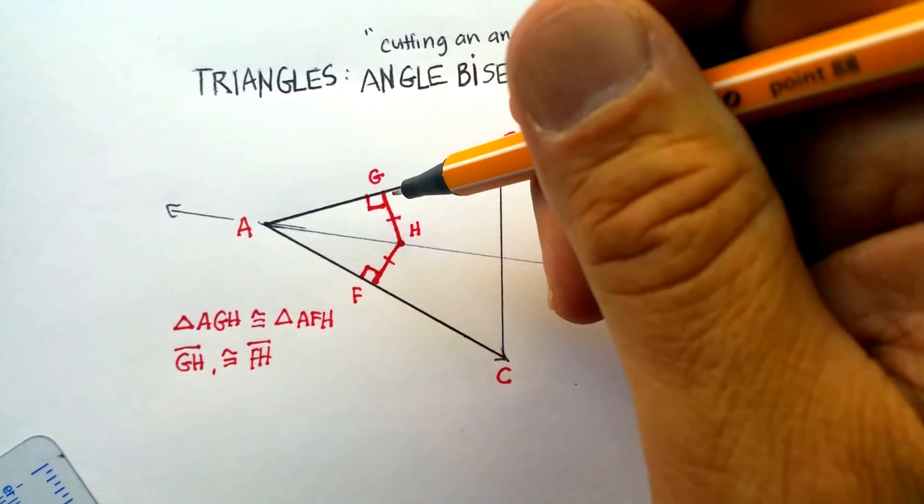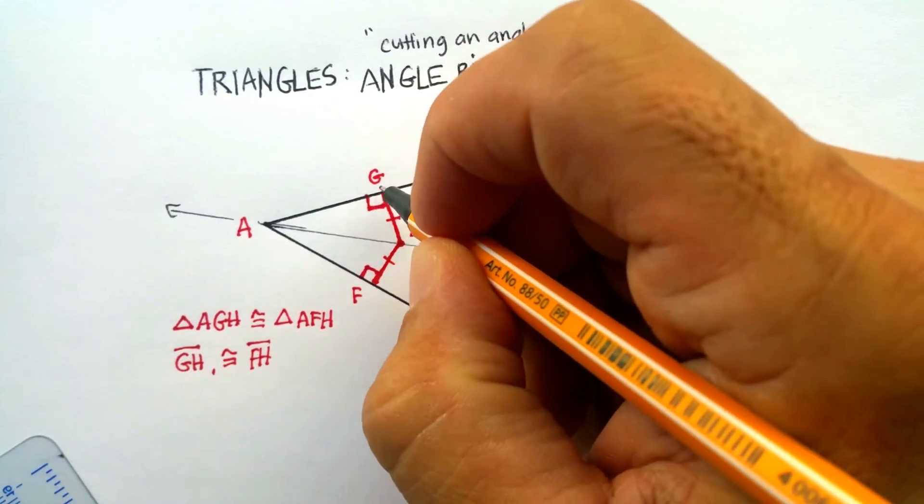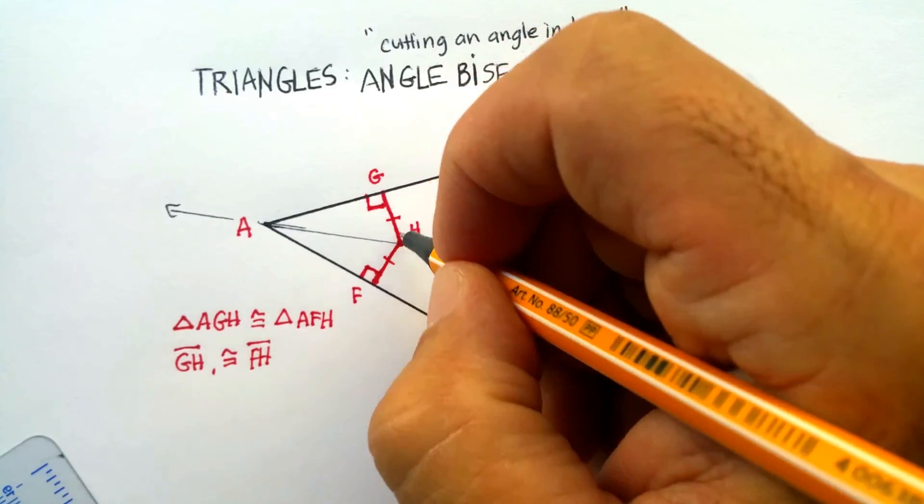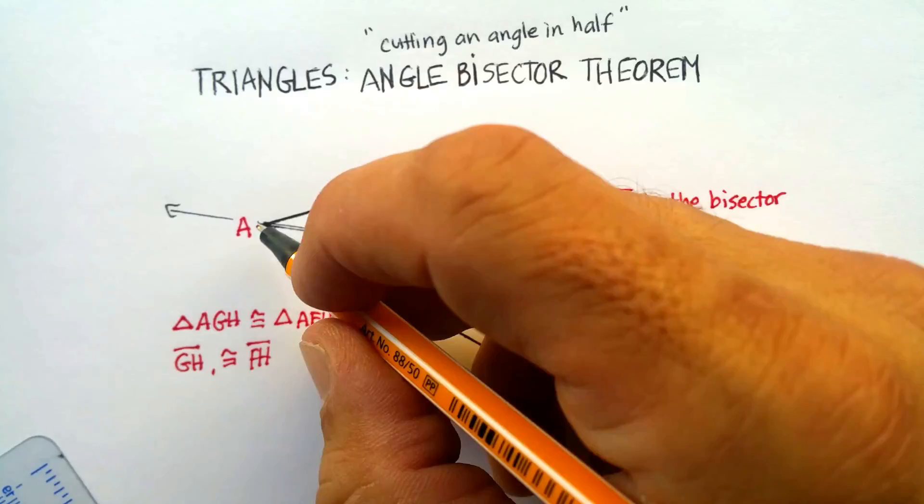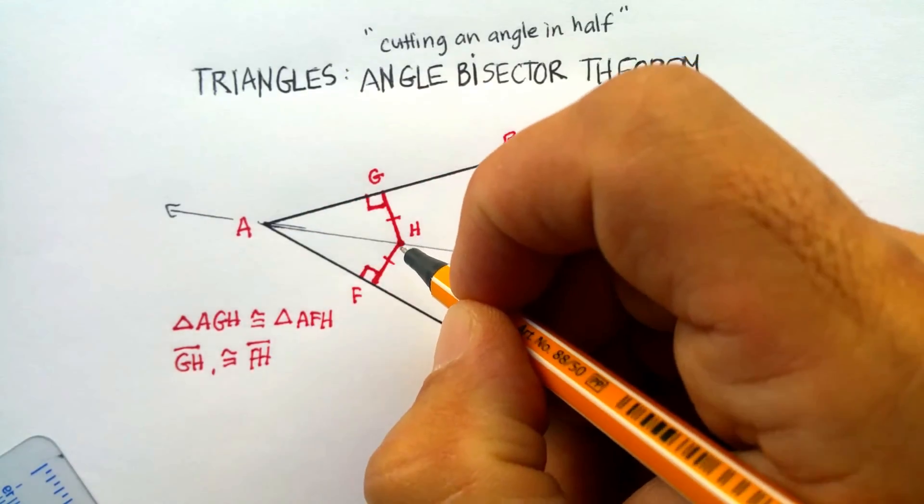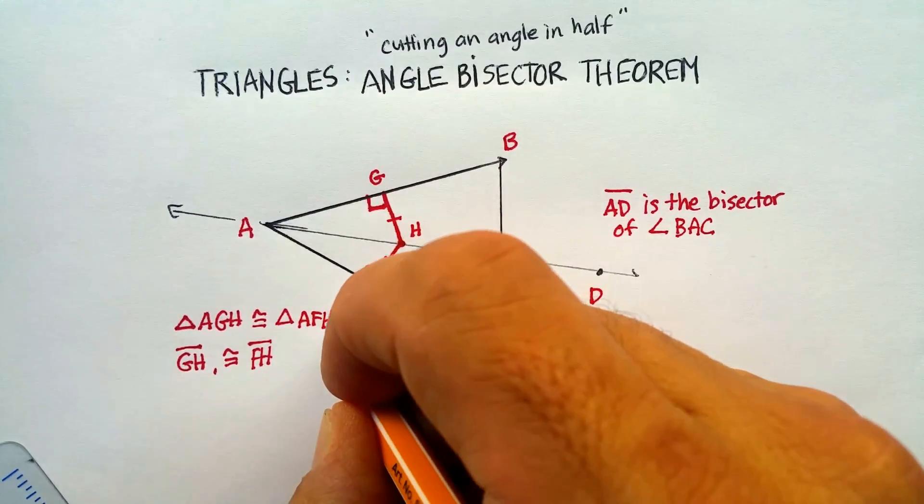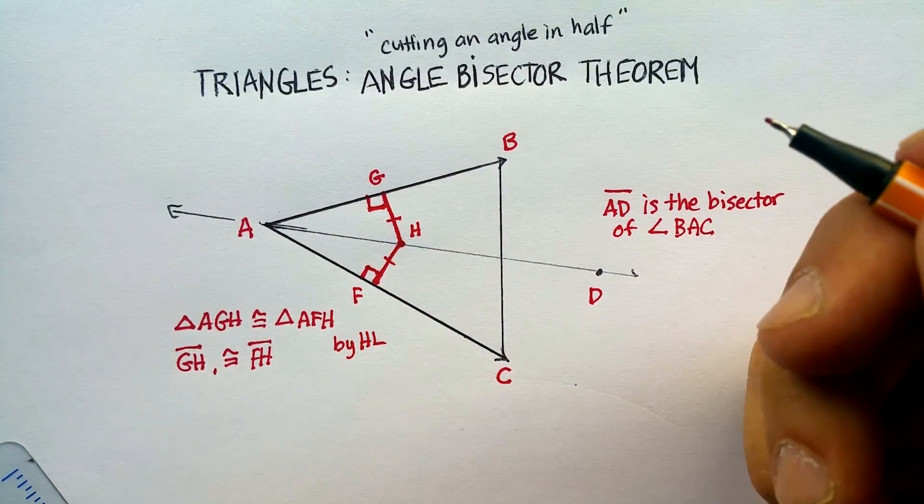According to the hypotenuse leg theorem, if one leg of a triangle is congruent to another leg of another triangle, and the hypotenuses are the same, in which in this case they are, these triangles are congruent by hypotenuse leg. Isn't that interesting?